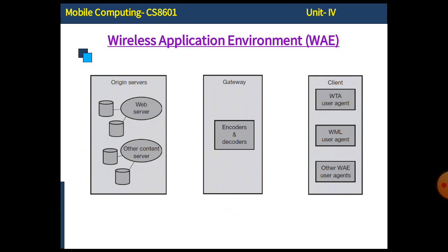On the client side, there are three different components — three different user agents. One is for telephone call service, telephone access, call management, and all types of service-related operations; that is the Wireless Telephony Application user agent. The next one, the Wireless Markup Language user agent, is responsible for internet access from the digital cellular phone to the origin server. The third is the other WAE user agent, only for phone-specific features. The entire client structure is represented by one digital cellular phone, and the user agents are a combination of different routines of the WML browser — the mobile version of the web browser.